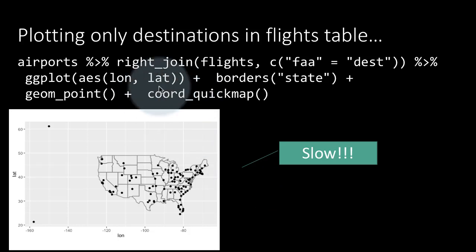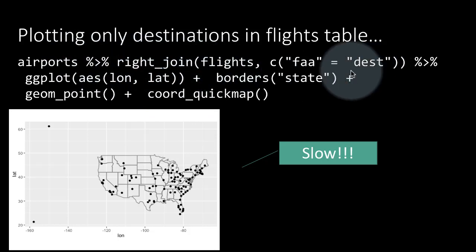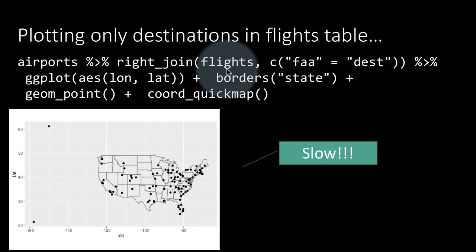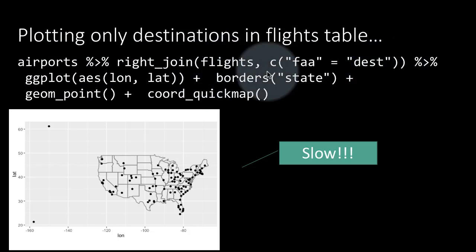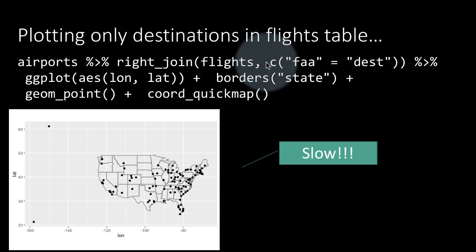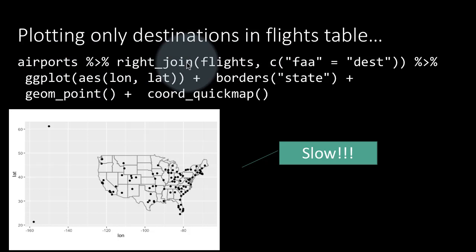So what is going on is, here we are saying airports right_join flights. So how many rows is the result of this join going to have? We know that the flights table has about 337,000 rows. And of course, each of the destination airports in the flights table will also be in the airports table. It's only that the airports table has extra rows, which are not present in the flights. So because of that, the result of this join will also have 330,000 rows.